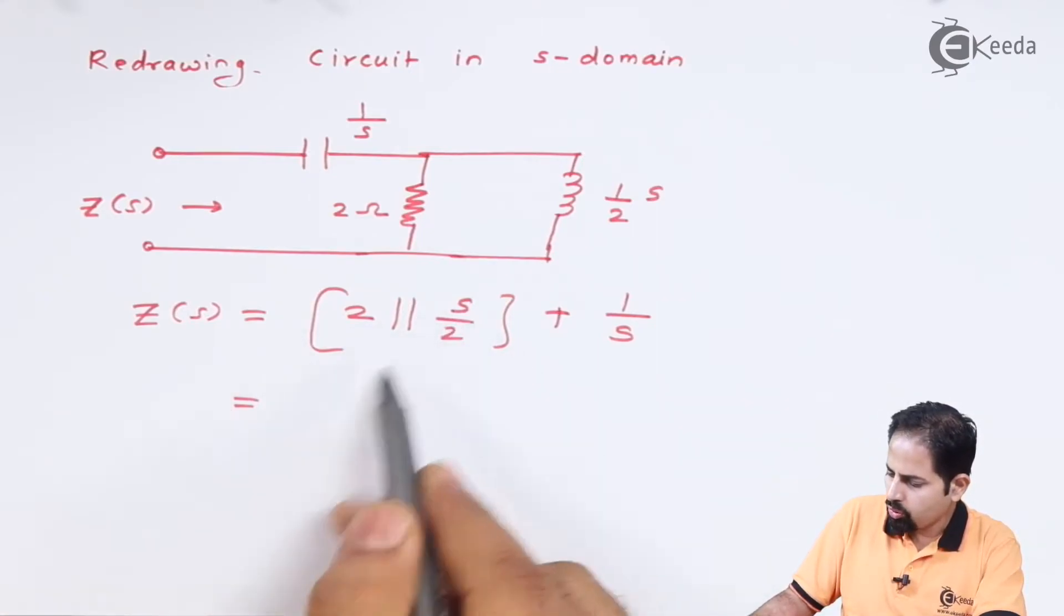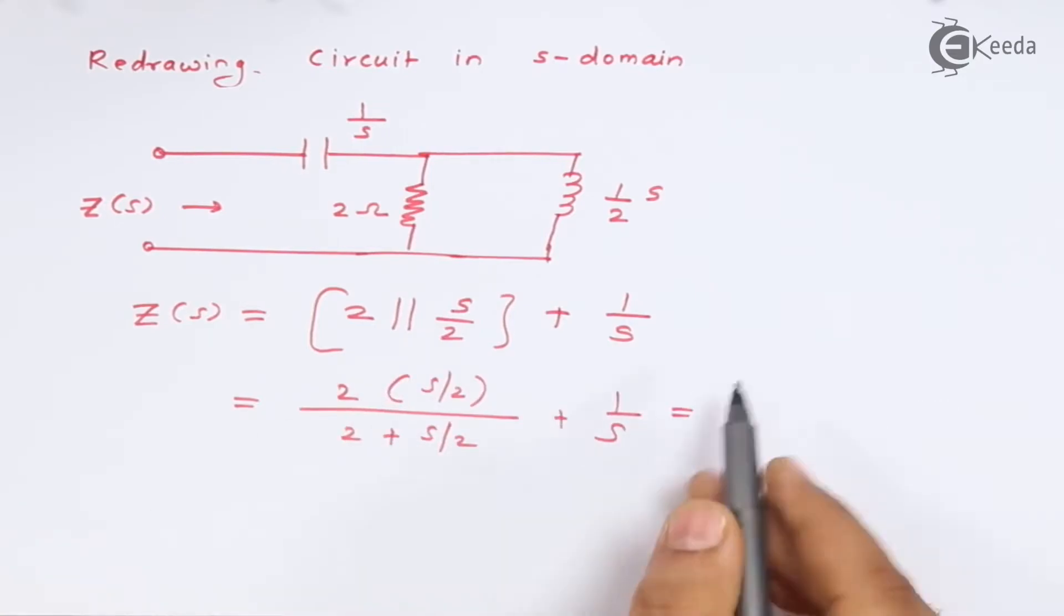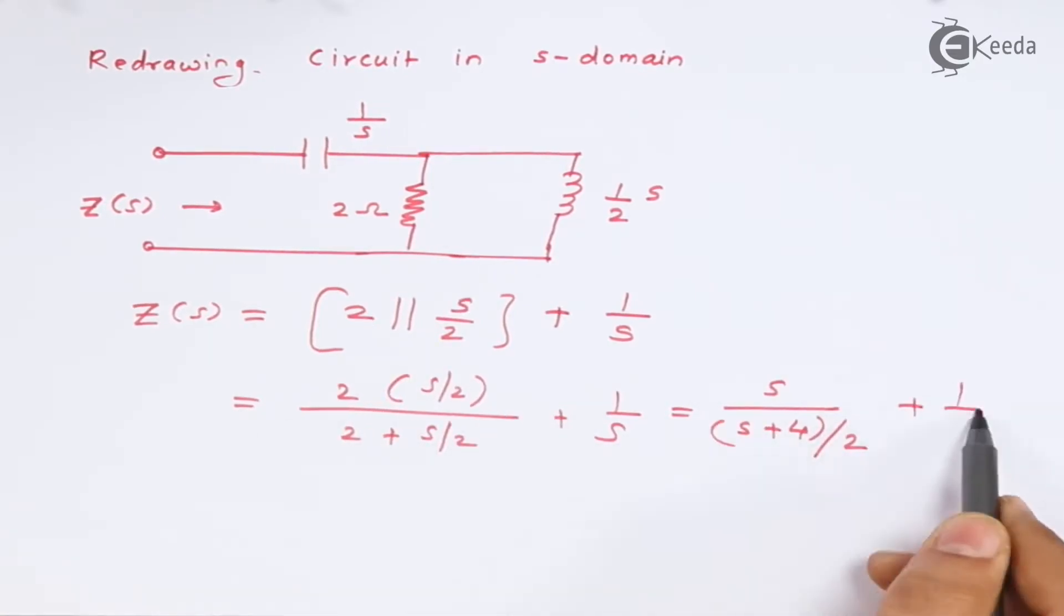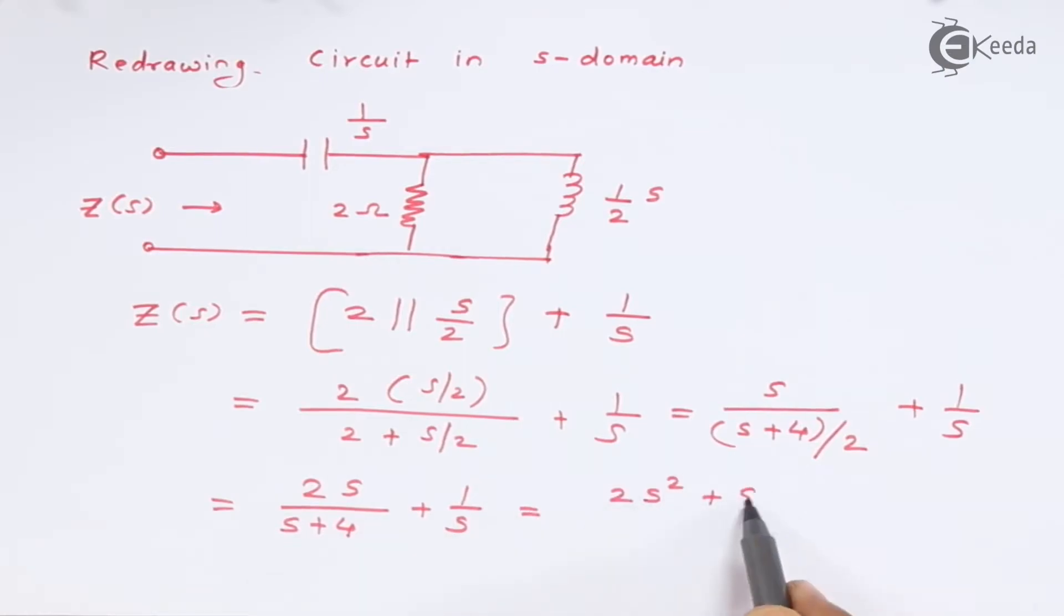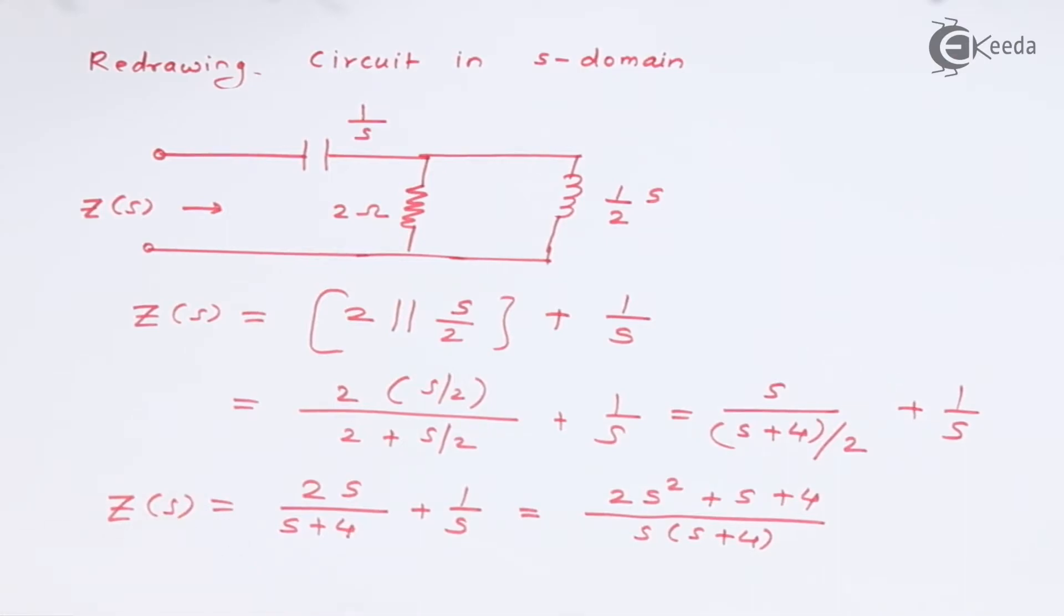So 2 into S by 2. This is what we have got. Z of S is equal to 2 S square plus S plus 4, and here it is S into S plus 4.